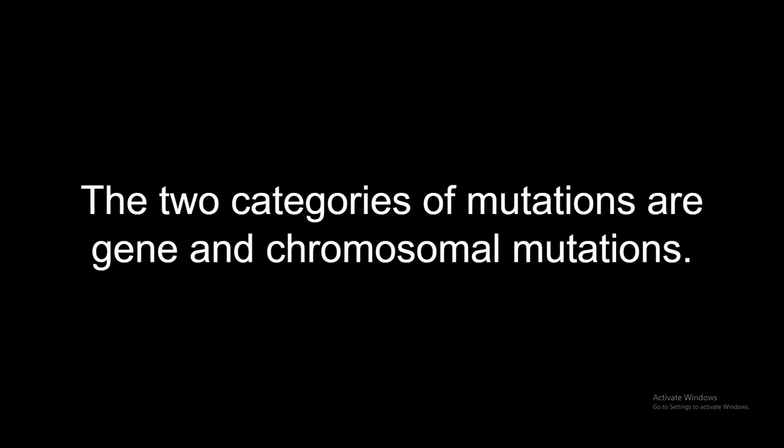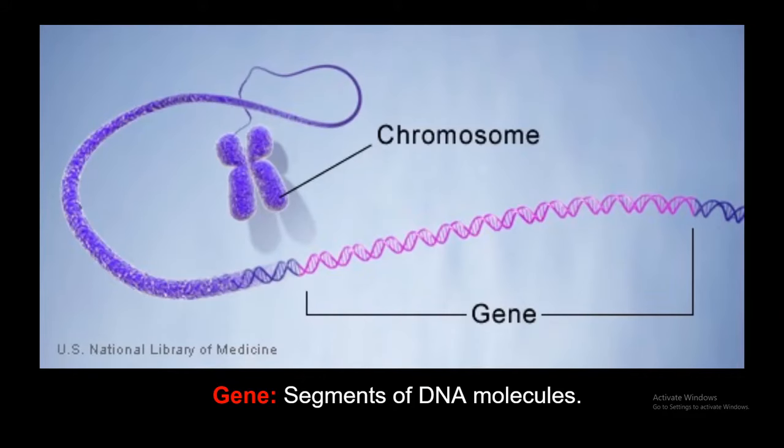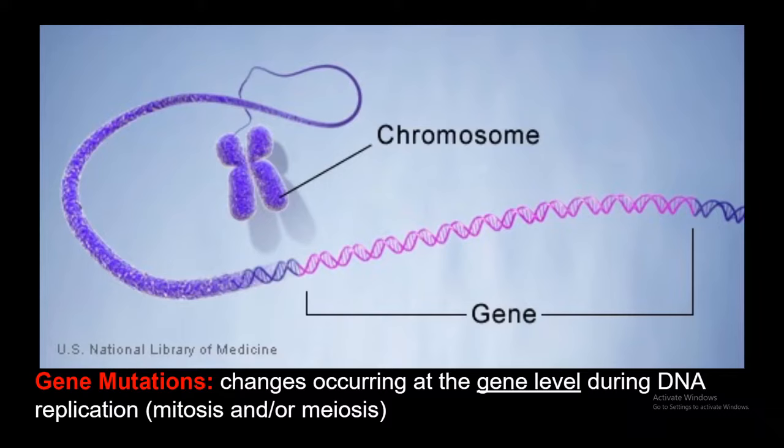Again, the two categories of mutations are gene and chromosomal mutations. So, let's talk about genes. What is a gene? A gene is a section of our DNA. So, a gene mutation is any change that occurs at the gene level during DNA replication. It can happen during mitosis or meiosis.